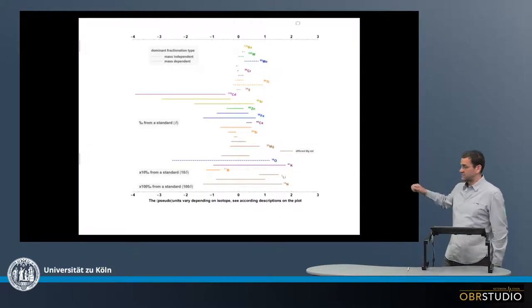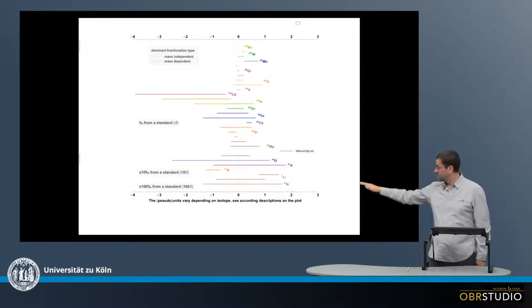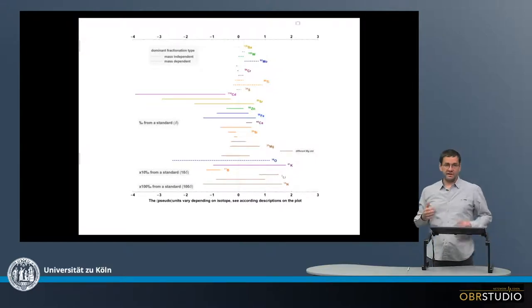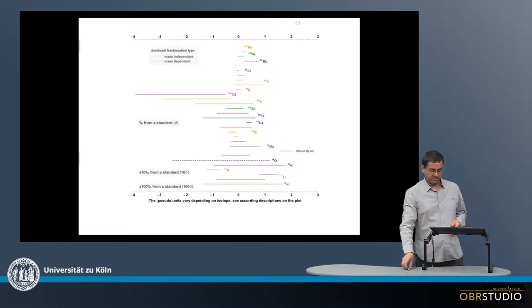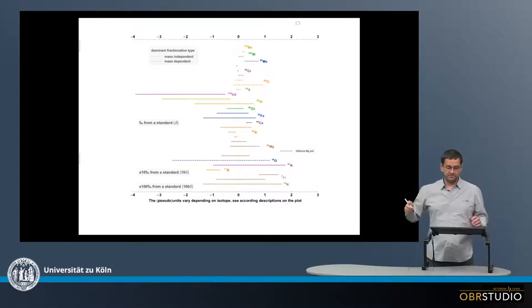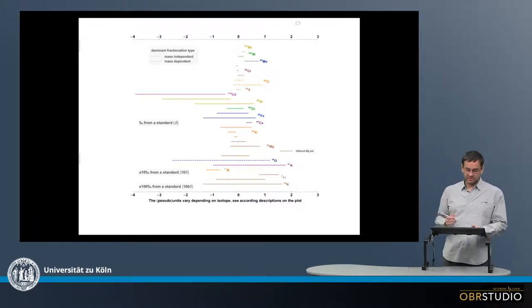Now this plot here collects all the isotope data we currently have from chondrites. On the x-axis is the isotope composition as delta notation, but without a pseudo unit here, so no per mil here or something like this.